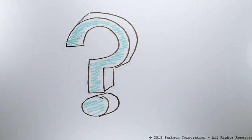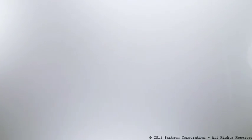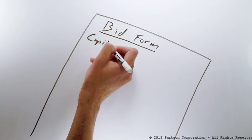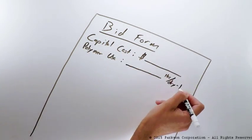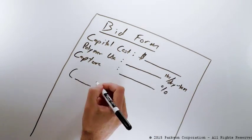So how do we properly evaluate life cycle costs when choosing a thickener without having to deal with the issues stated? That's where an innovative bid procedure has been breaking ground. In this procedure, the bid is completed as on any other job. However, when a vendor puts their capital cost, they also write in their polymer usage and capture rate.